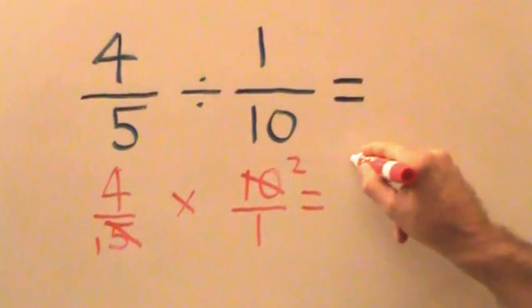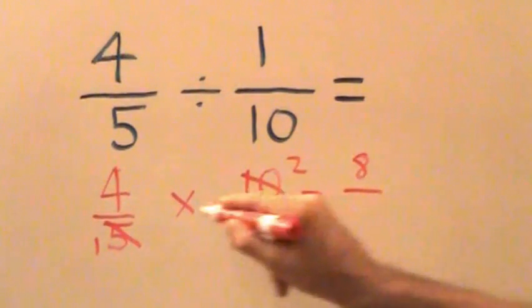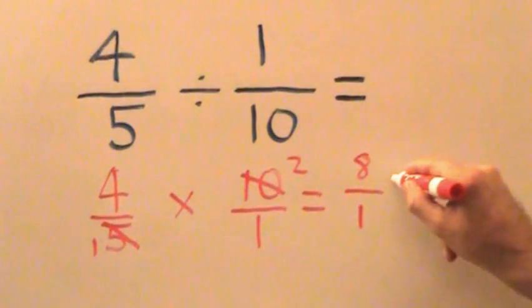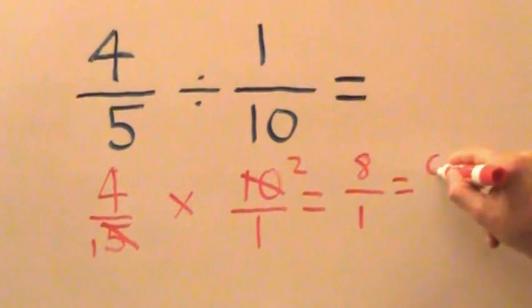Four times two is eight. One times one is one. We do not need to put the denominator of one, so our final answer is eight.